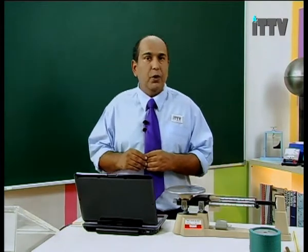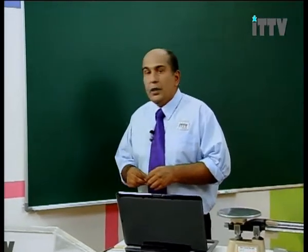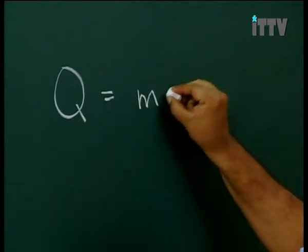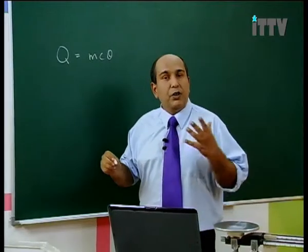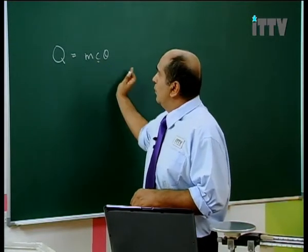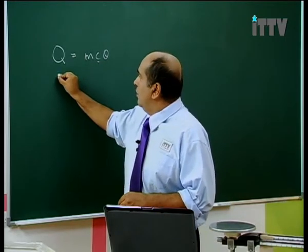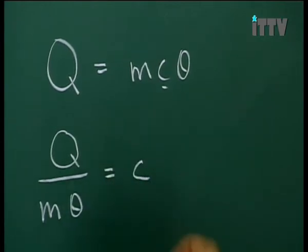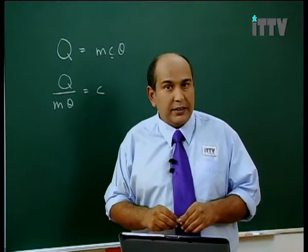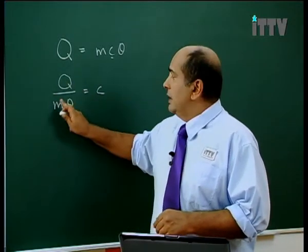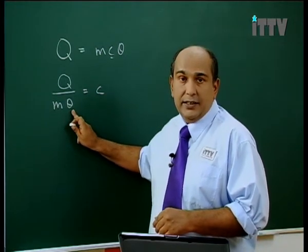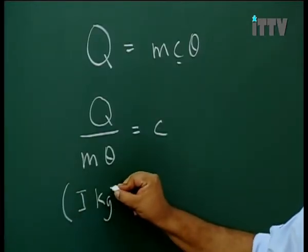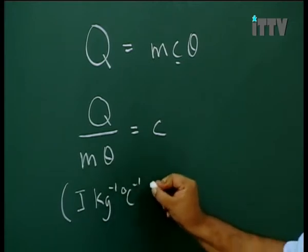Let me write this formula on the board. We start with the original formula Q equals MC Theta. If we want to find the value C, we move everything over. Therefore, Q over M Theta equals C. From here we get our units, which is Joule kg⁻¹ degrees Celsius⁻¹.